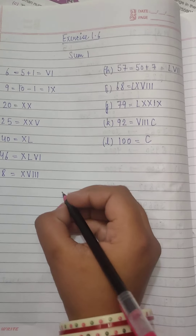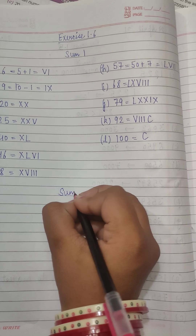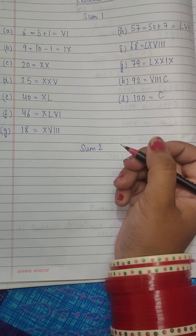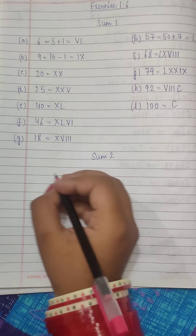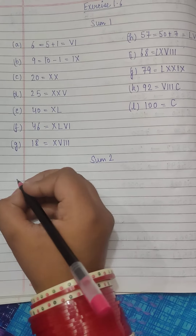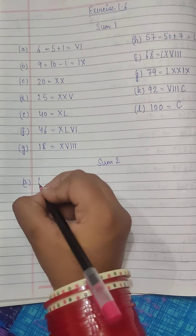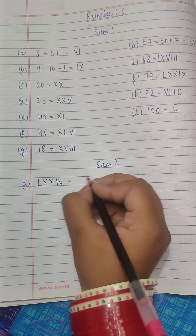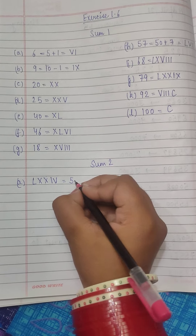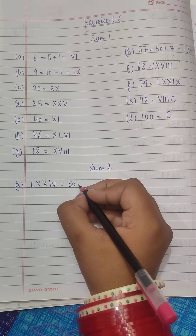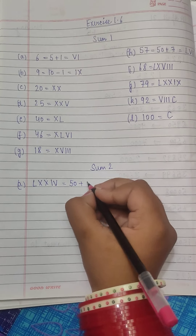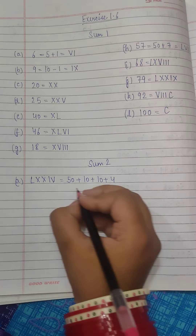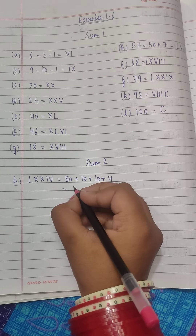Now we are coming to Sum 2. In Sum 2, we have to write the following in Hindu-Arabic numerals. In A part, we have LXXIV. What is L? That is 50. Since everything is on the left side, we have to add: 50 plus 10 plus 10 plus 4. That is 74.